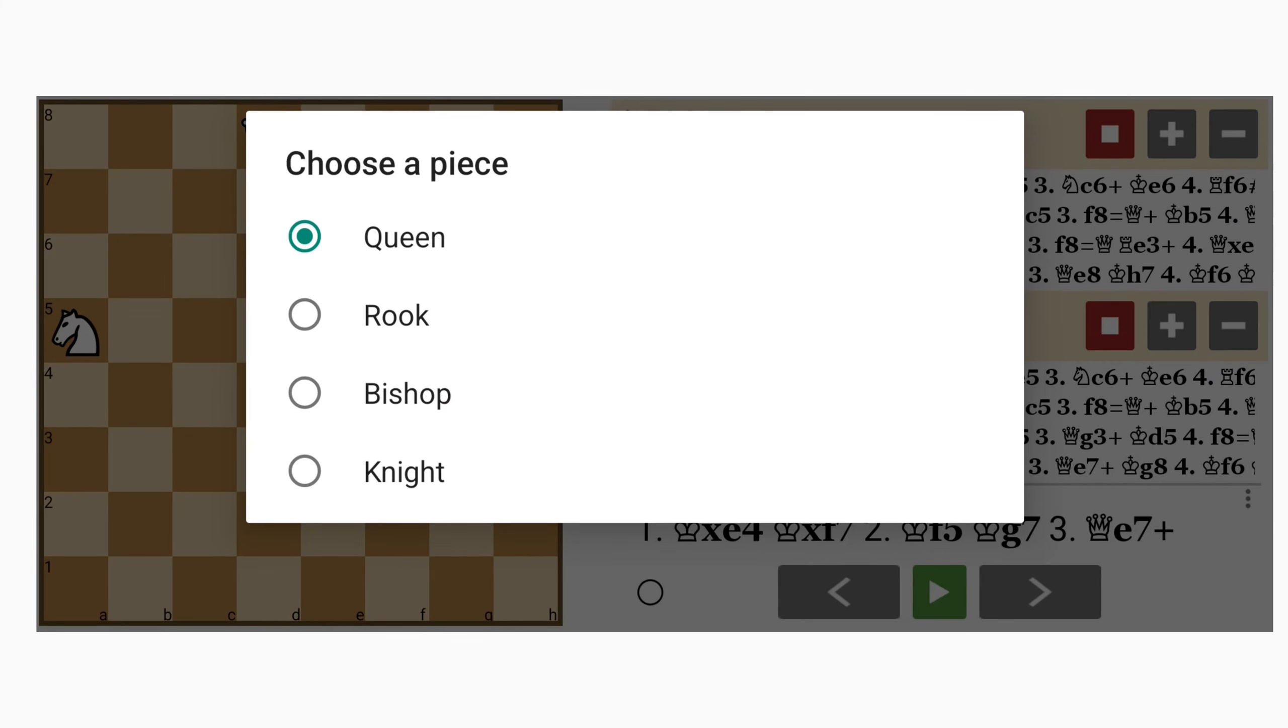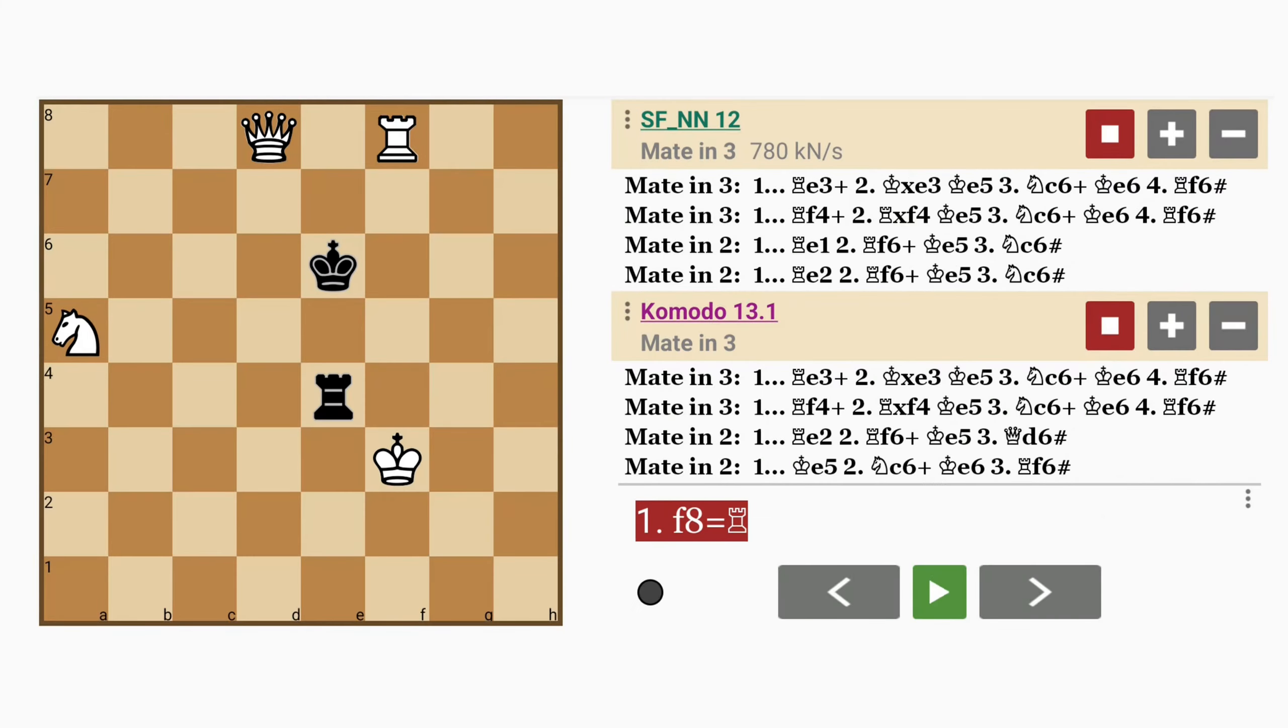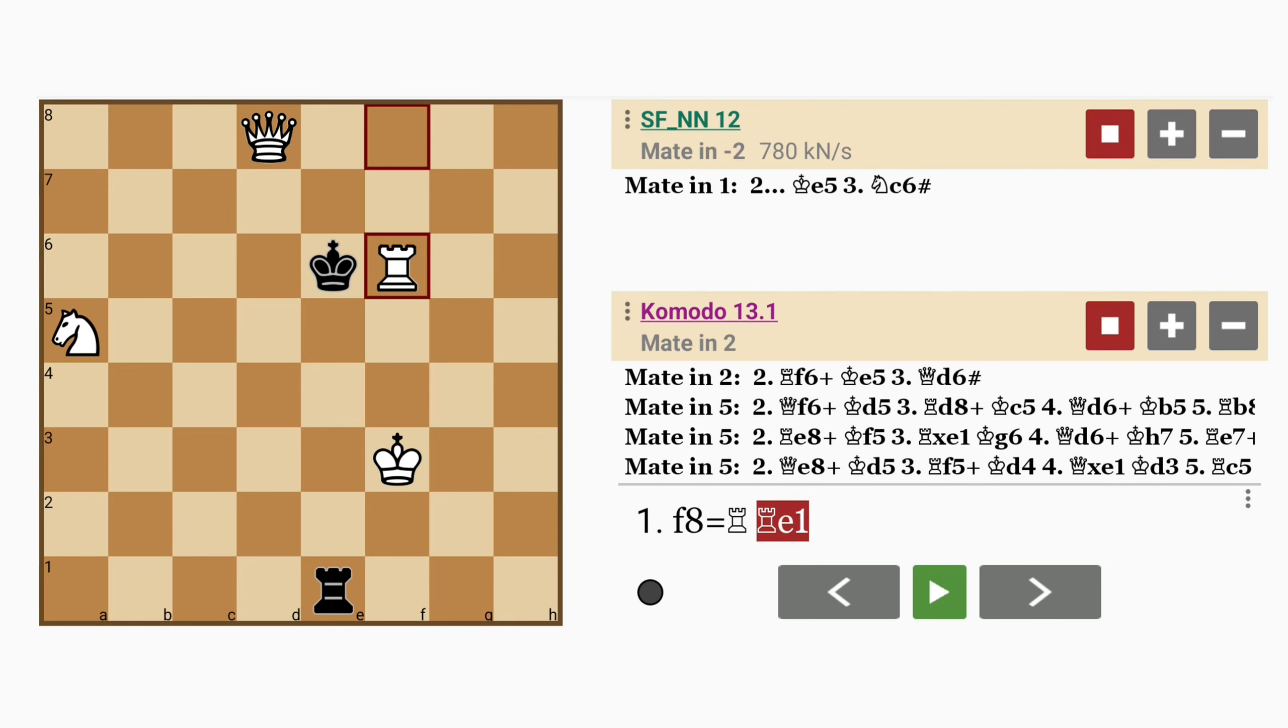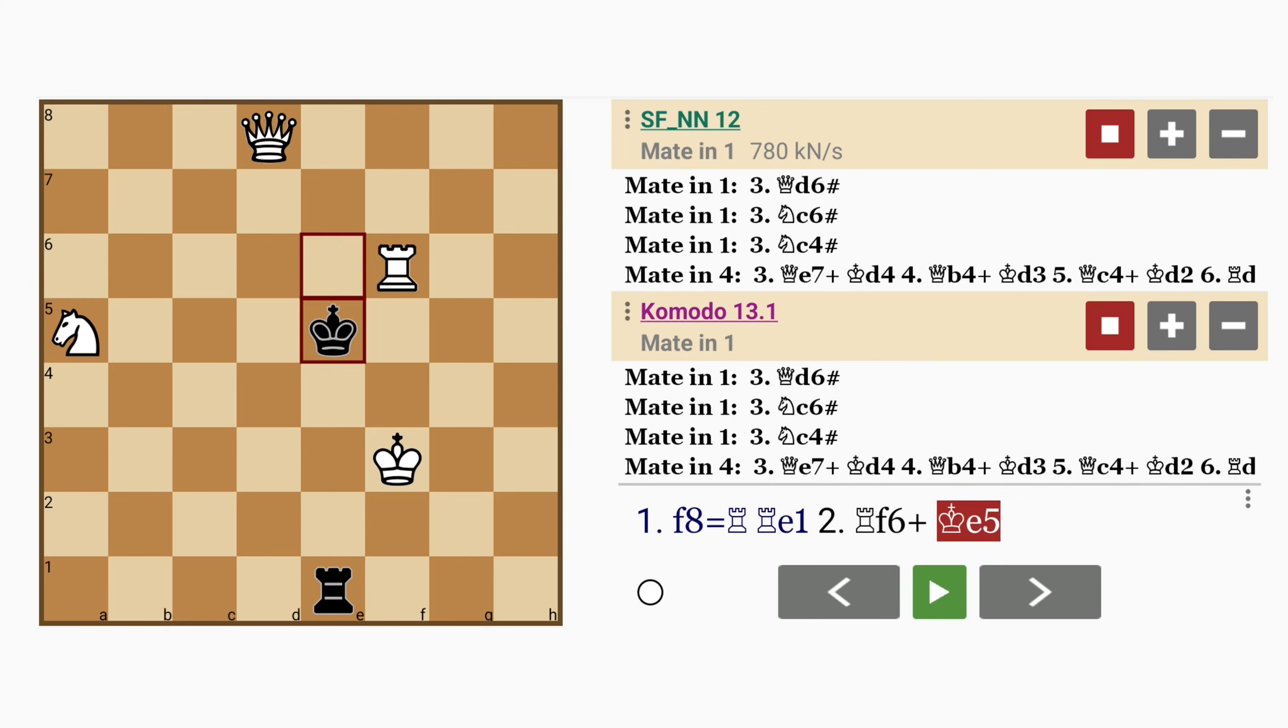Pawn to f8 with underpromotion to rook. Okay, what is the threat here? Let's say rook to e1. Well then rook to f6 check, king to e5 and there's so many ways - queen to d6 also mates.